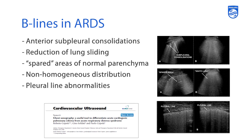With ARDS you also get these pleural line abnormalities, which are seen on that last ultrasound image set where the pleural line looks almost jagged or sawtoothed. You can see how that looks in comparison with a normal pleural line depicted in the comparison image.